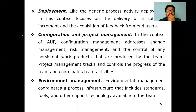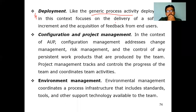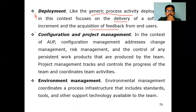The fourth activity is deployment. Similar to general process activities, in AUP deployment involves delivering the software and getting feedback from end users. The fifth framework activity is configuration and project management. Once the project is delivered to the customer, it must be configured — meaning settings are applied — and project management must address risks and any issues that arise. Configuration management addresses change management, risk management, and control of any persistent work products produced by the team.